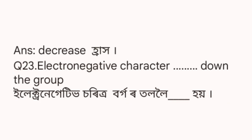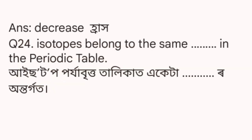Question 22: atomic size along the period — the answer is decrease. Question 23: electronegativity character down the group — the answer is decrease.